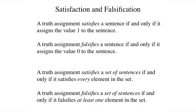This exercise tests your understanding of evaluation by asking you to determine the truth values of various sentences for a given truth assignment. We say that a truth assignment satisfies a sentence if and only if it assigns the value 1 to that sentence. A truth assignment falsifies a sentence if and only if it assigns the value 0 to the sentence. A truth assignment satisfies a set of sentences if and only if it satisfies every element of the set. And a truth assignment falsifies a set of sentences if and only if it falsifies at least one element in the set.